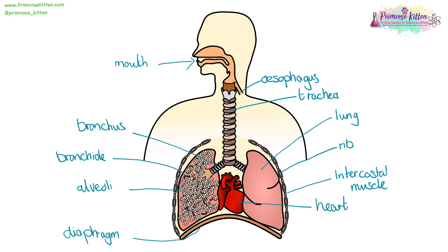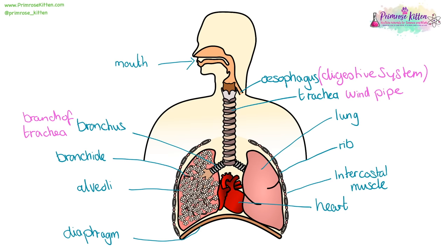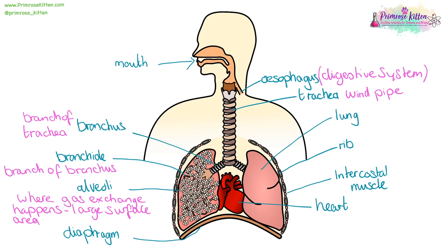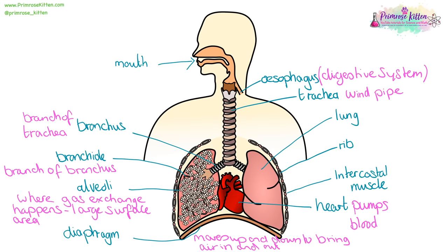Here we have our respiratory system. It goes in through the mouth or the nose, down into the trachea, which is also known as the windpipe. Then into the bronchus, which is a branch of the trachea. Into the bronchioles, which are a branch of the bronchus. And into little grape or cauliflower shaped alveoli. This is where gas exchange happens and they have an incredibly large surface area. Your diaphragm moves up and down to bring air in and out. The intercostal muscles allow the rib cage to expand, and the ribs protect the lungs.